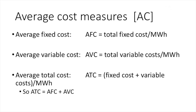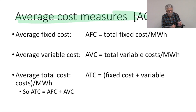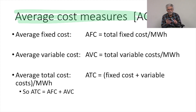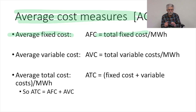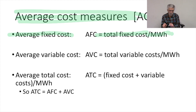Let's think about our various average cost measures. We're going to calculate average cost for each different component of our costs. We've talked about fixed costs and variable costs, and now we're going to think about calculating our average costs for both of those components. Our average fixed cost: you take your total fixed cost of $2,129,000 and divide it by the number of megawatt hours you generate, and that's your average fixed cost.